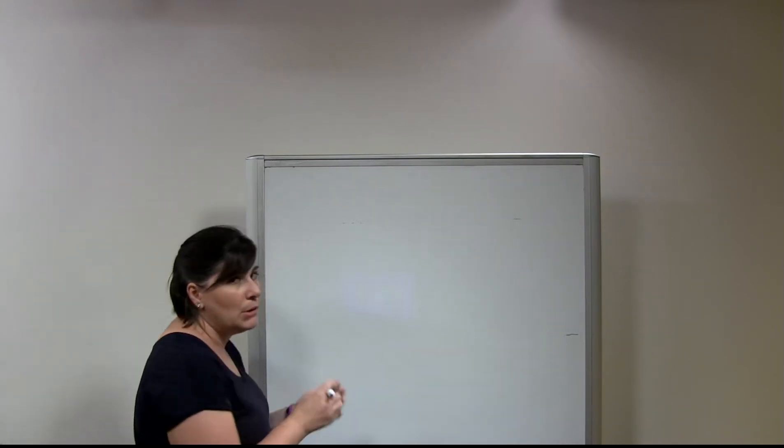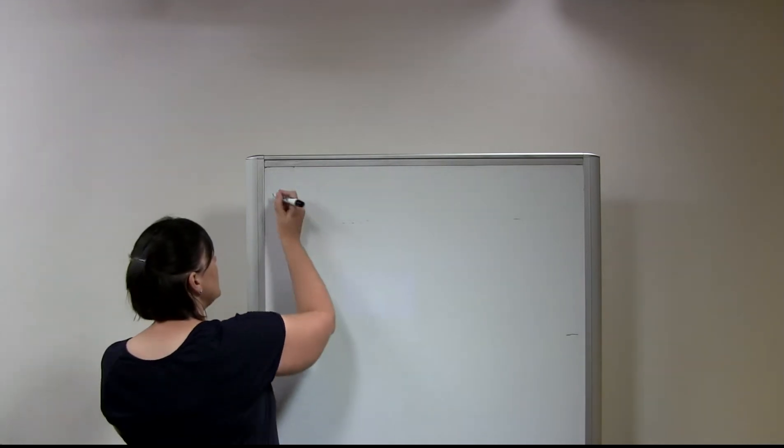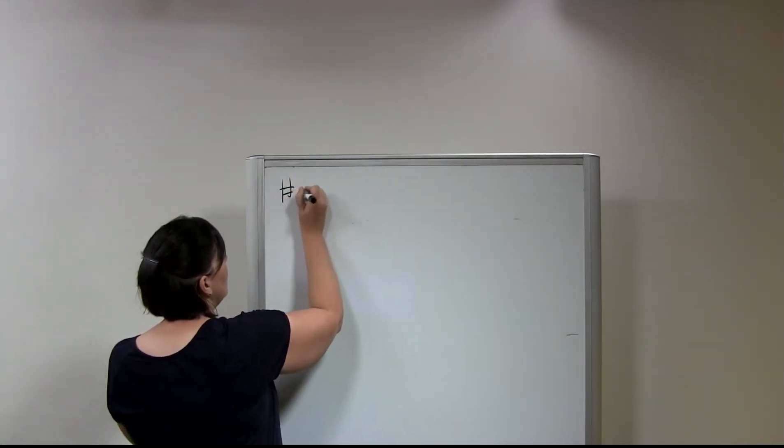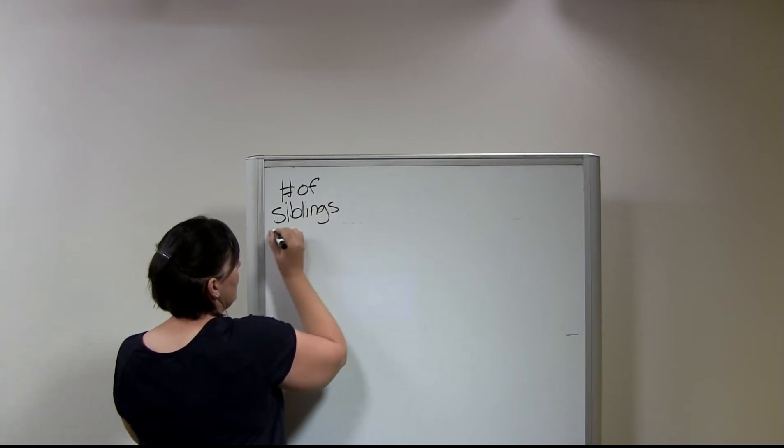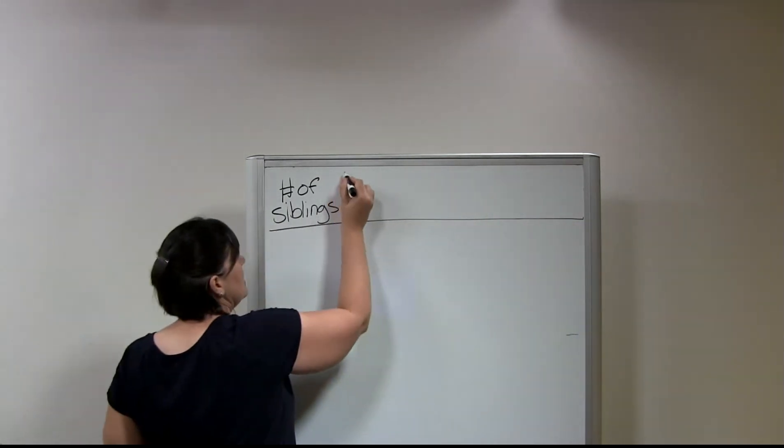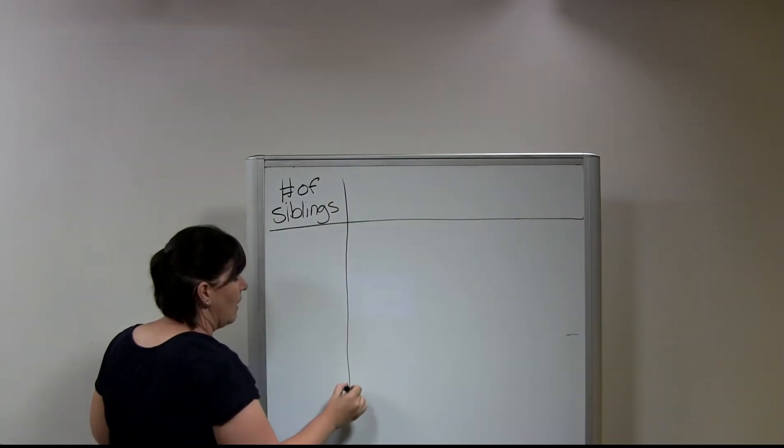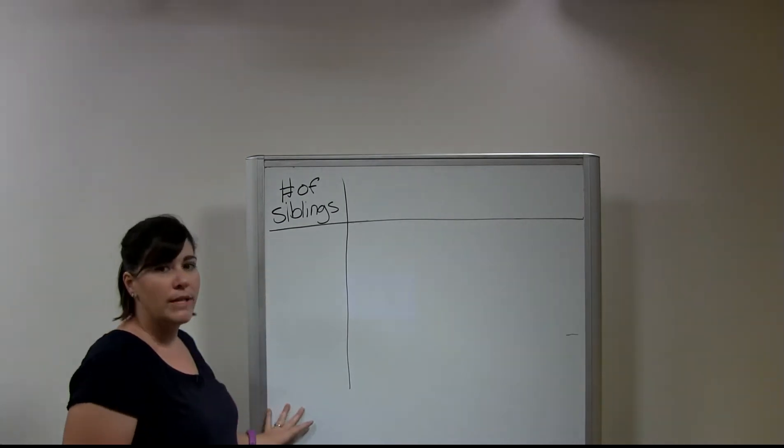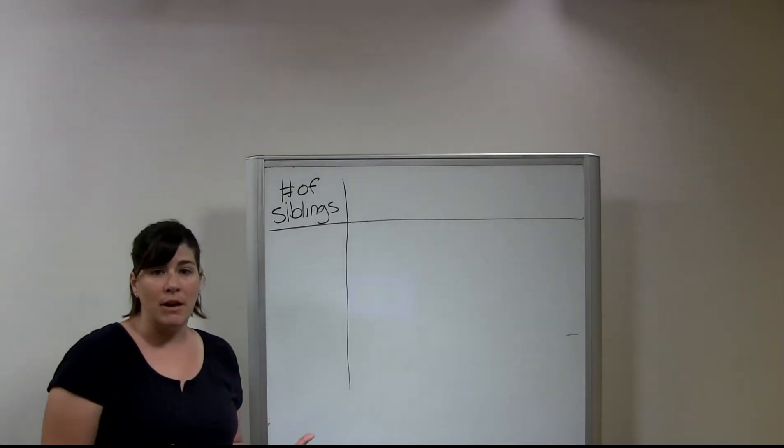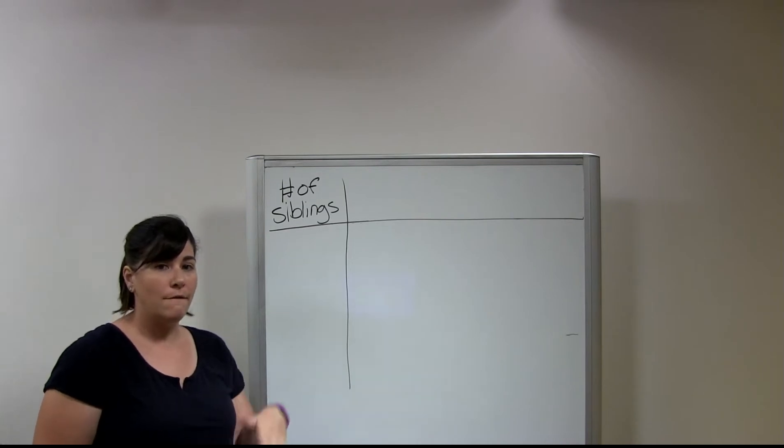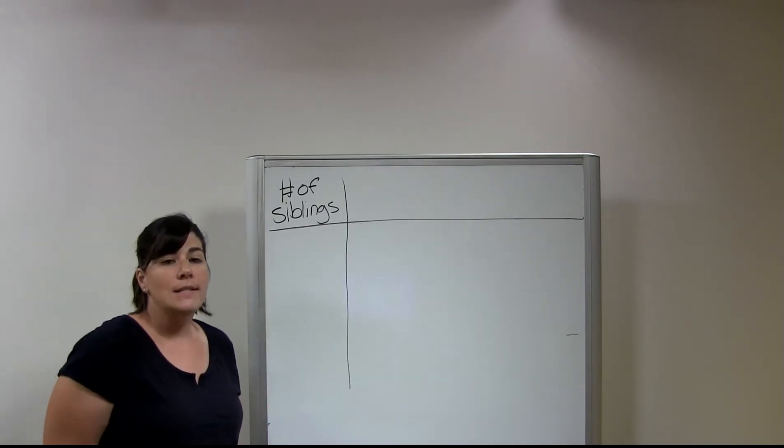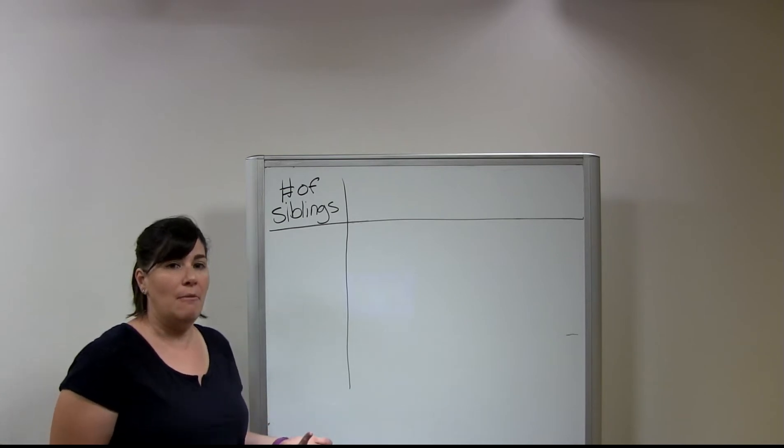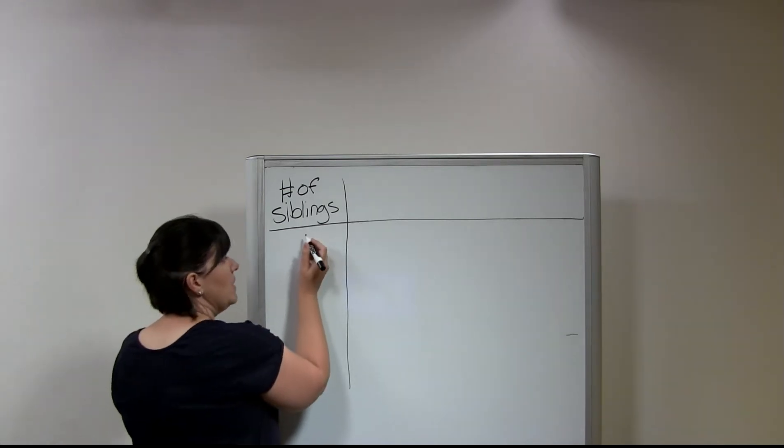So I'm going to do a simple numeric level variable. So we're going to do number of siblings. So that's going to be my variable that we are analyzing or doing a frequency distribution of. So with the categories for my variable, because it's a numeric variable, I want to put those categories in order from least to most or lowest to highest. So this is going to make it make more sense when you're viewing it.